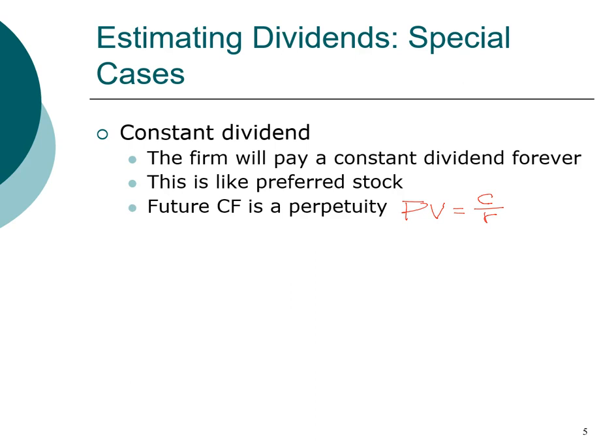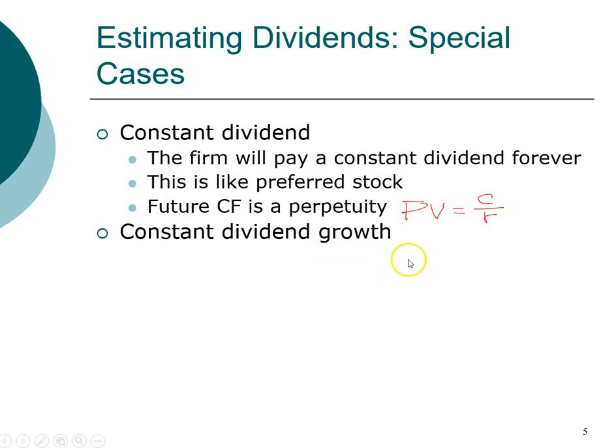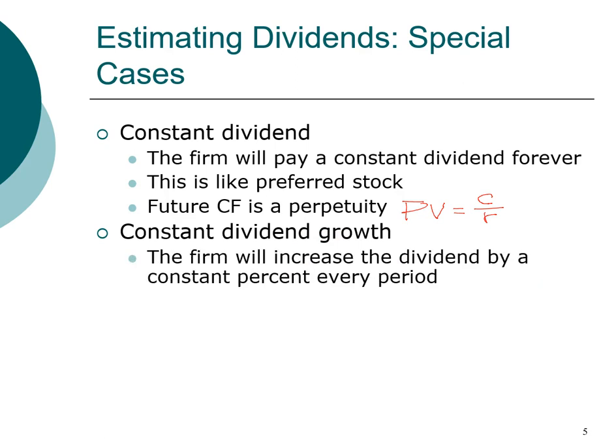Assuming the dividend amount is constant forever is not realistic for a lot of companies. One of the main reasons people give for buying stock is that as the company expands and grows, so will the dividend amount. So the next case we're going to look at is the constant dividend growth case, where we assume the firm will not pay the same dividend each year but instead the growth rate will be constant.